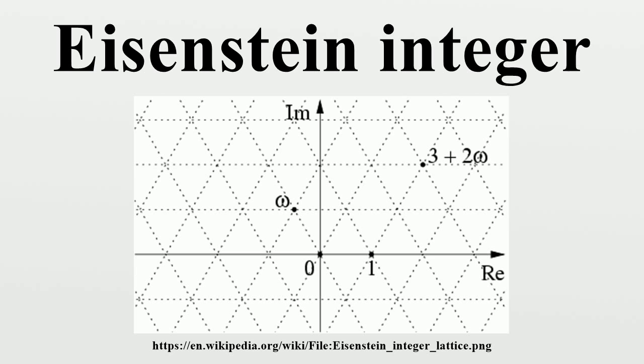Since the norm of a non-zero Eisenstein integer is positive, the group of units in the ring of Eisenstein integers is the cyclic group formed by the sixth roots of unity in the complex plane. Specifically,